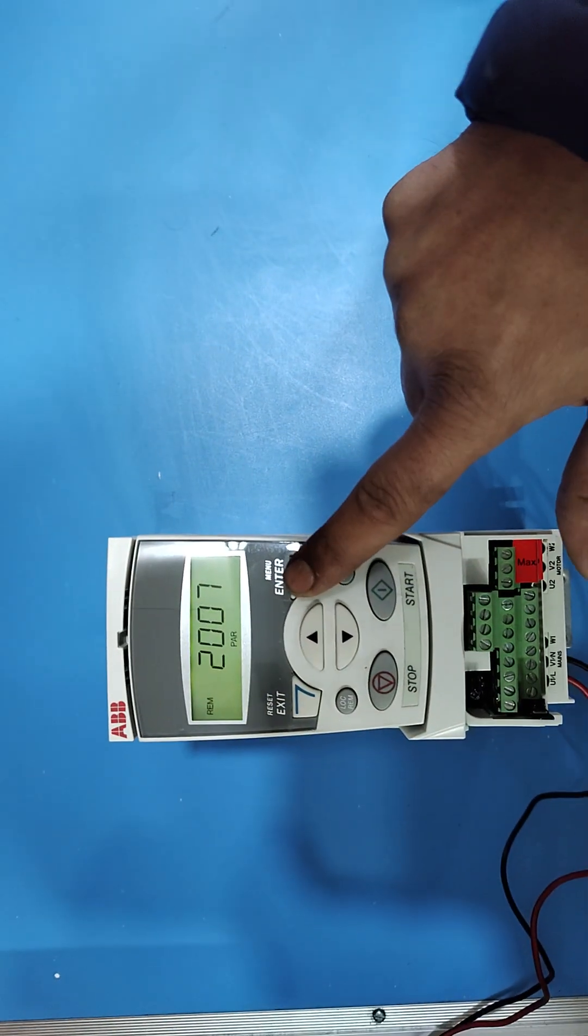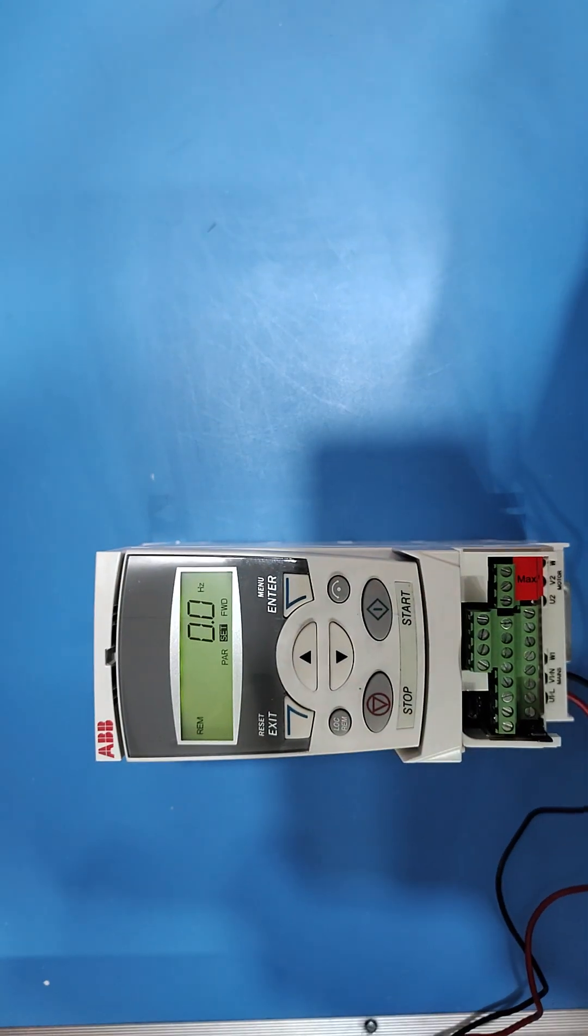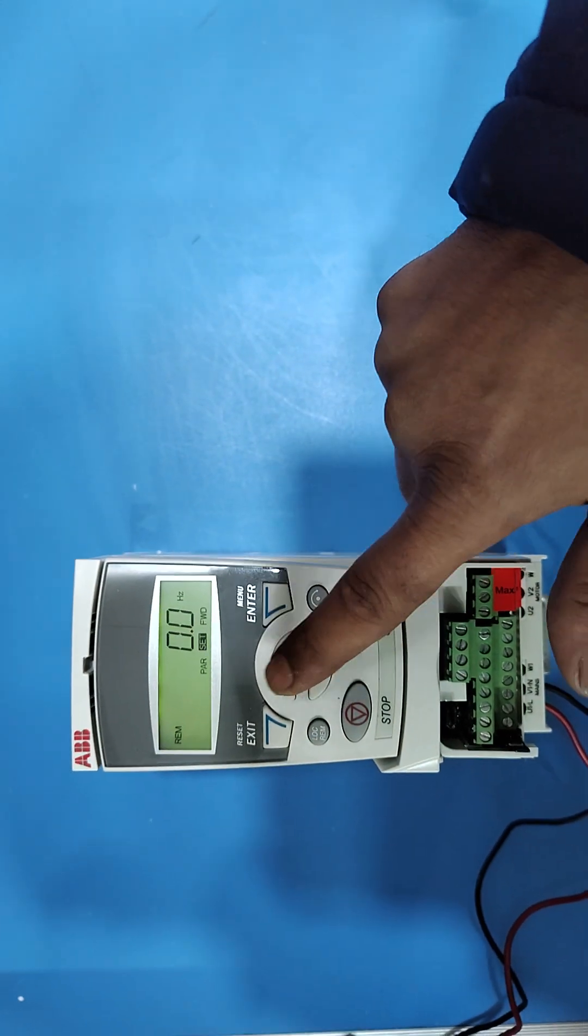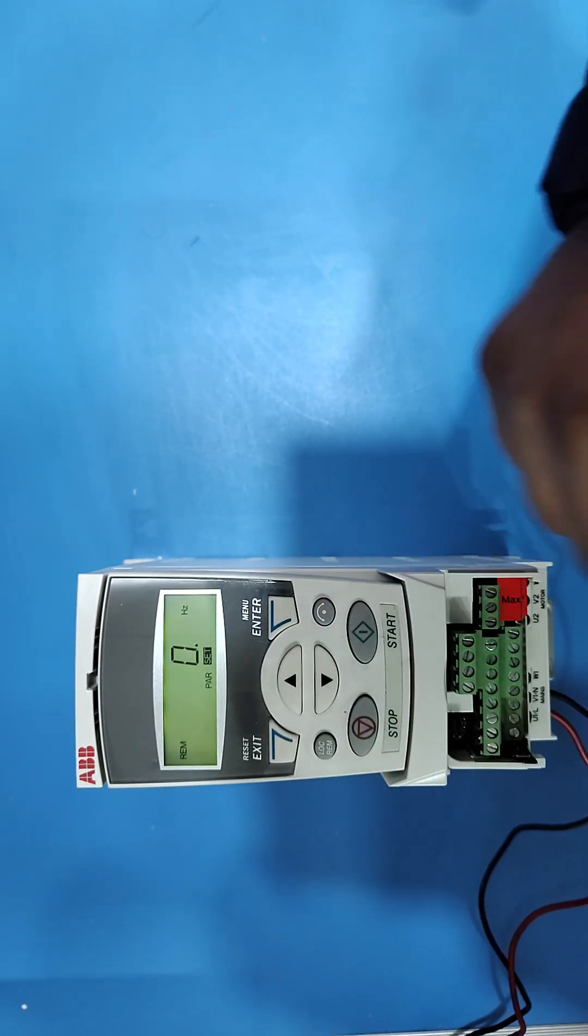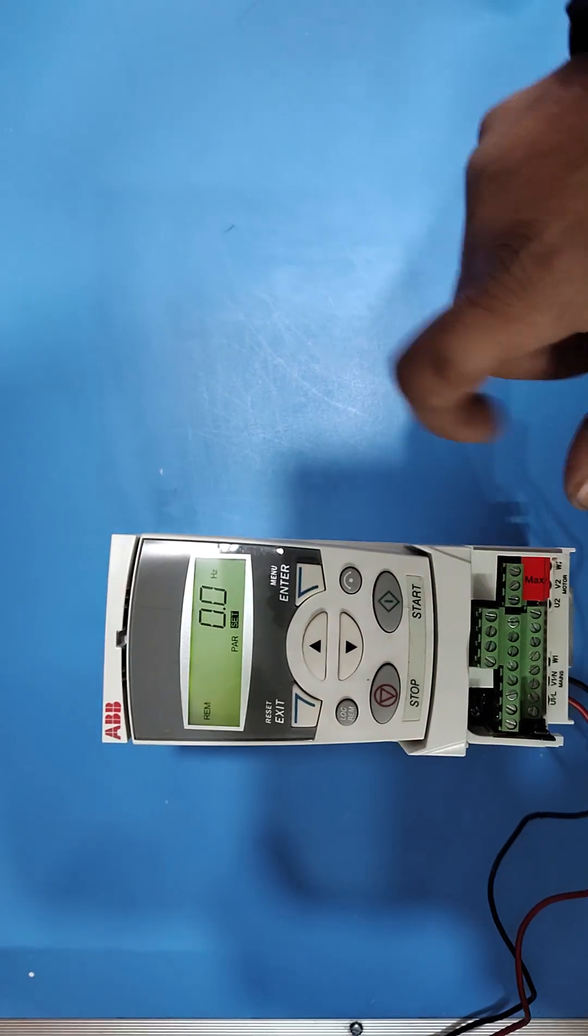Press enter key two times. By pressing up and down key, you can set your minimum frequency value. Press enter to save.